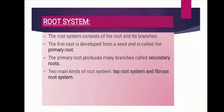Root system consists of roots and its branches. The first root developed from a seed is called the primary root. The primary root produces many branches called secondary roots, and the branches that arise from the main root are called lateral roots. According to their kinds, root systems may be of two types: tap root system and fibrous root system.